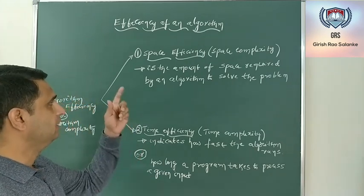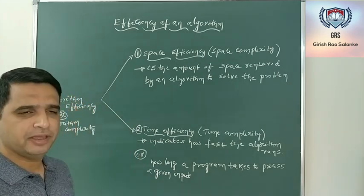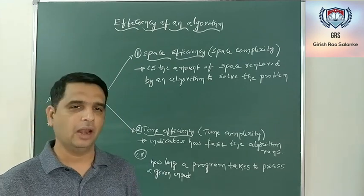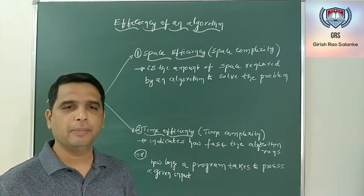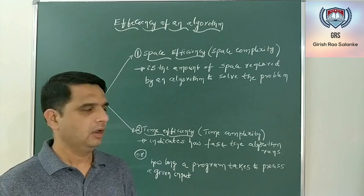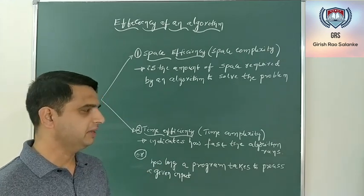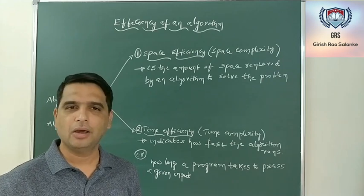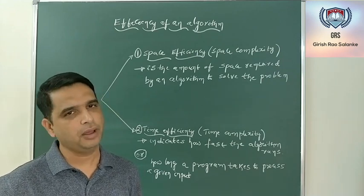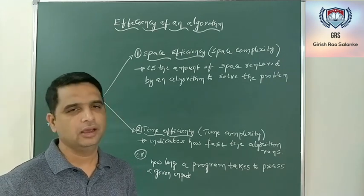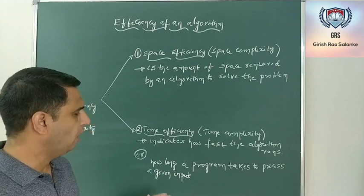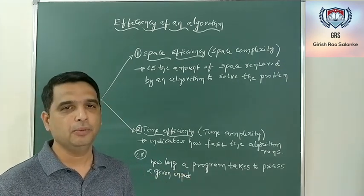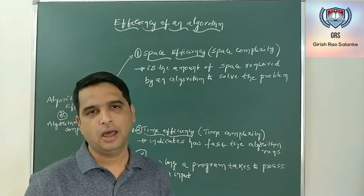Space complexity can be defined as the amount of space required by an algorithm to solve a particular problem. Now coming to time complexity, it indicates how fast the algorithm or program runs, or it can also be defined as how long a program takes to process a particular input and transform it into an output.